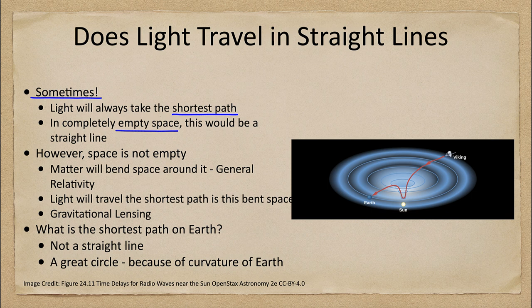However, the problem is space is not empty. Space has lots of things in it. For example, as we look at in the image here, we see our sun. Our sun has mass, and that deforms the space around it.